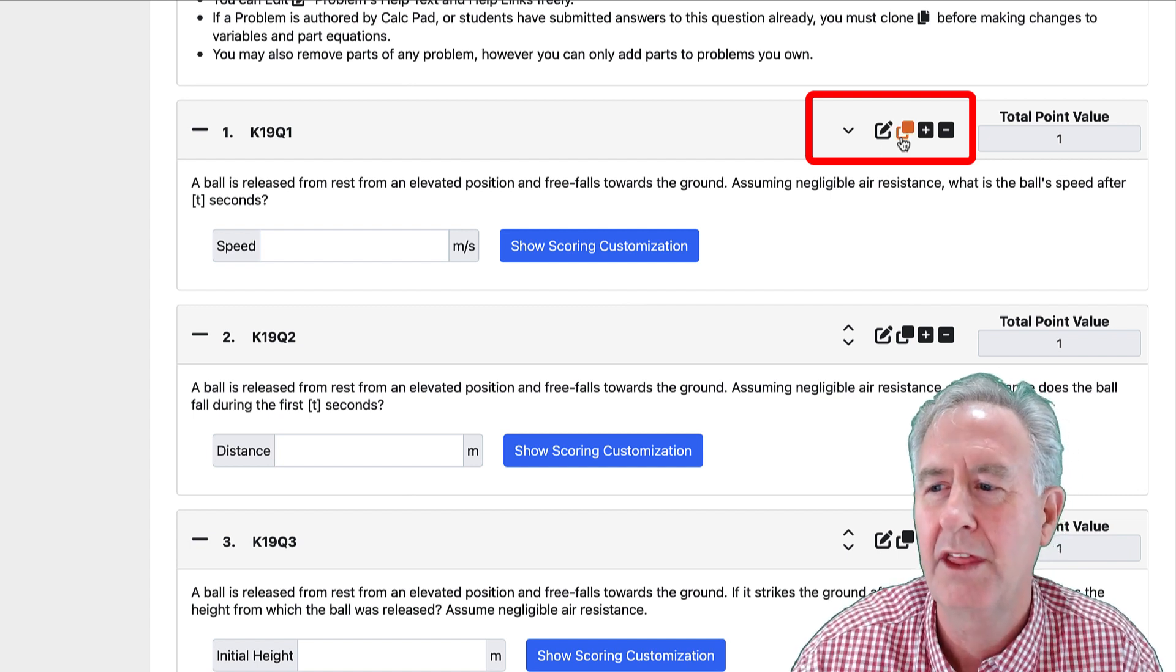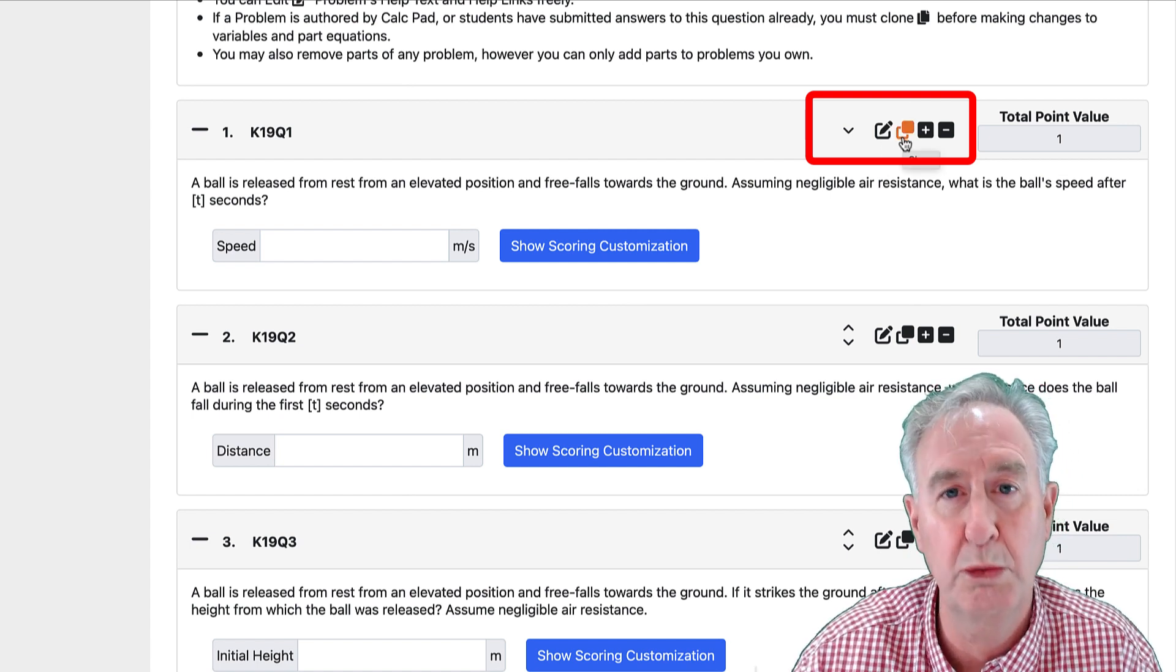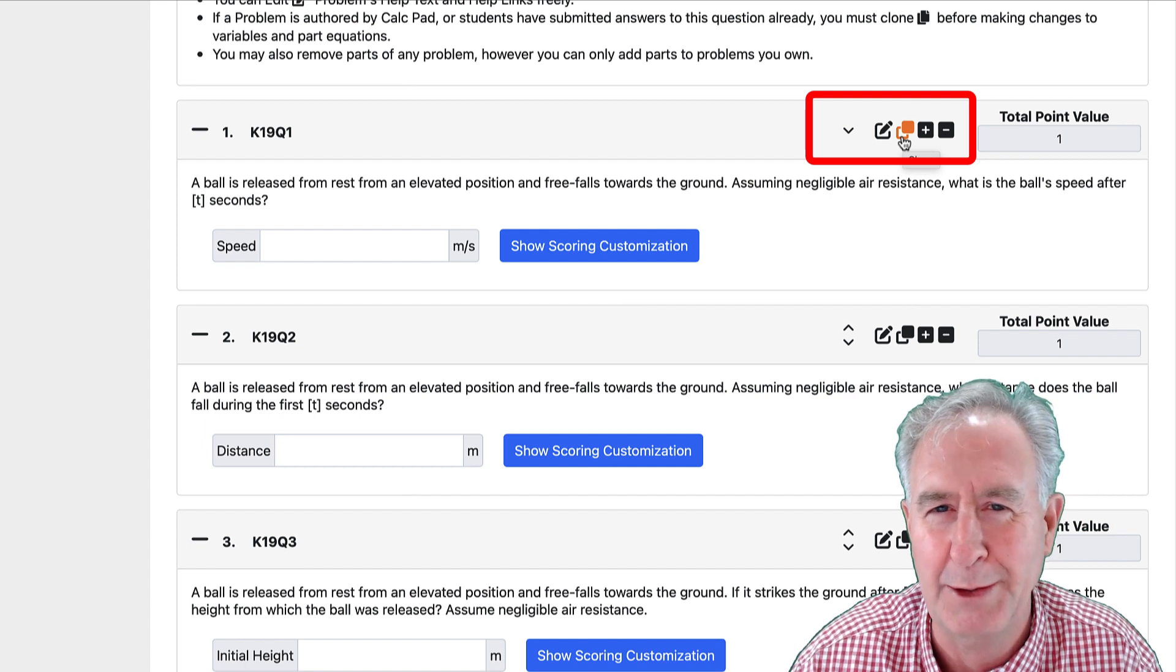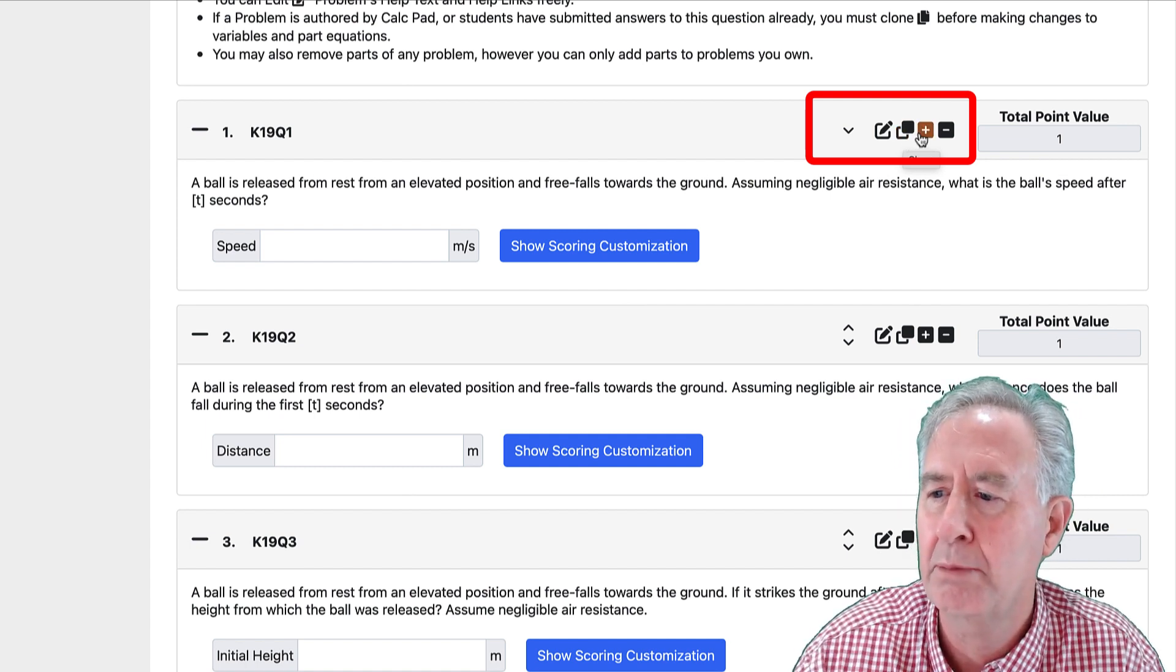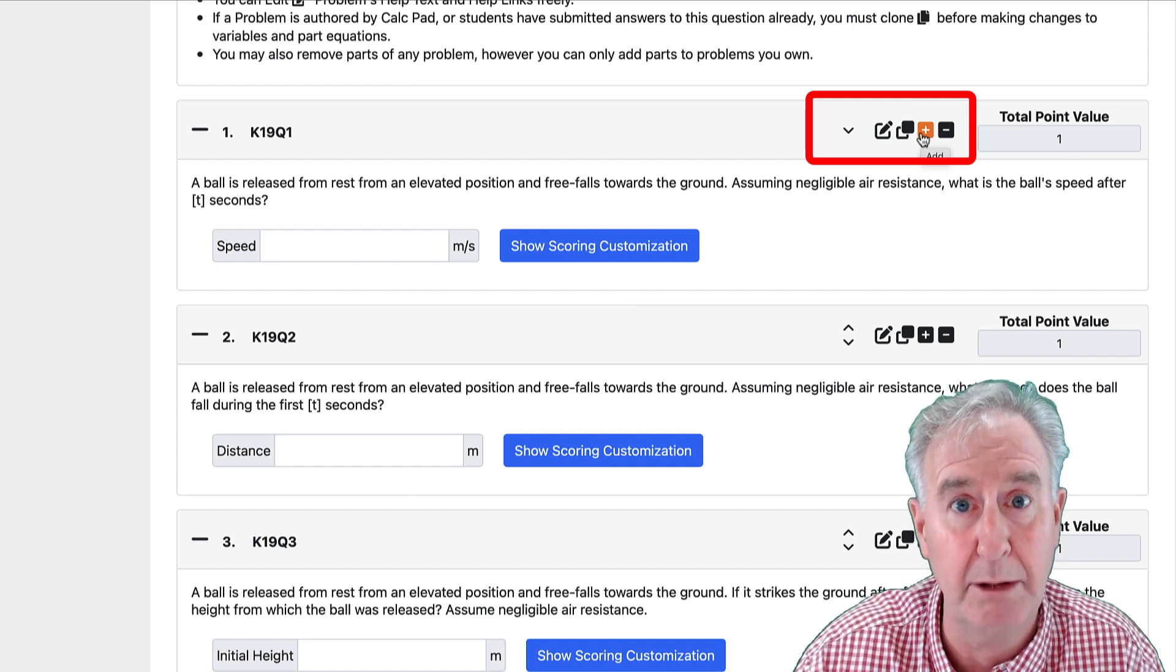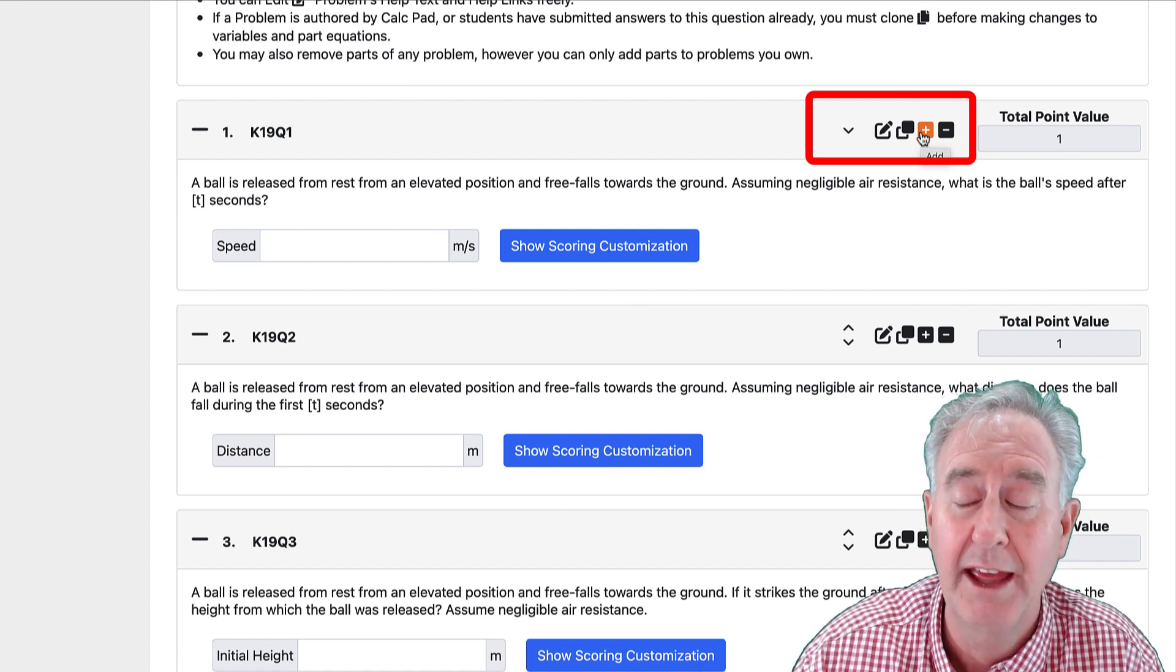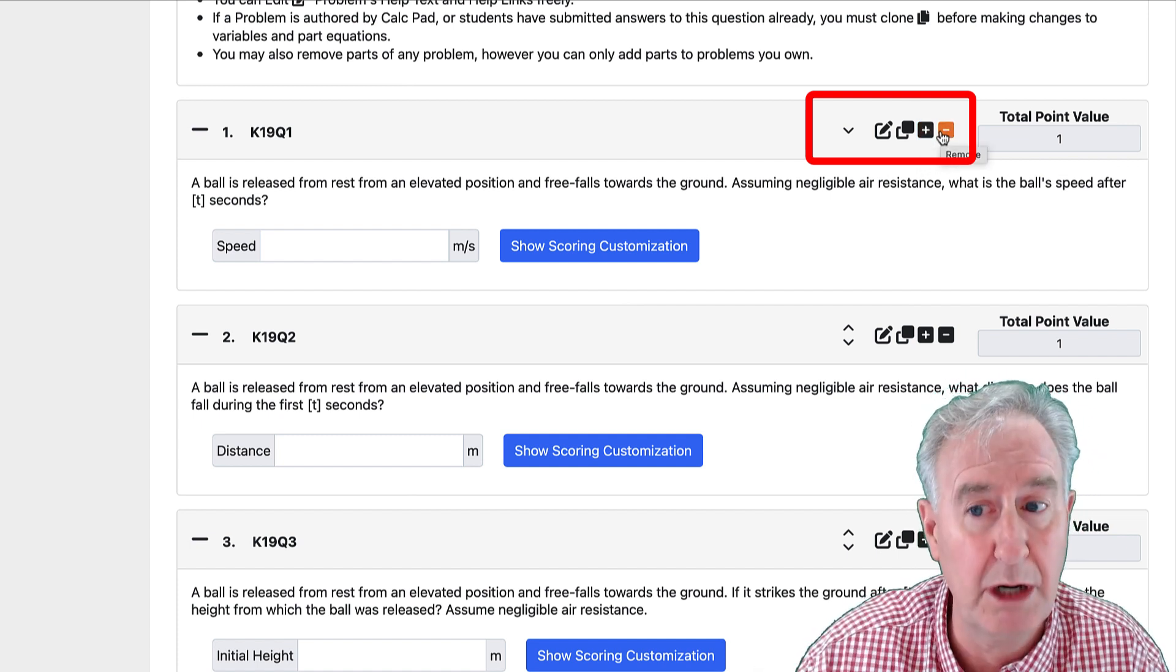The icon right here is the duplicate problem. You can duplicate the problem. I have two of them with different numbers. The plus means you can add a problem, and I'll be discussing that. The minus means you can take a problem away.